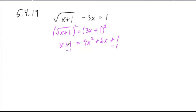We subtract 1 from both sides which cancels completely, subtract x from both sides. We get 0 equals 9x² plus 5x, and we can now solve by factoring.